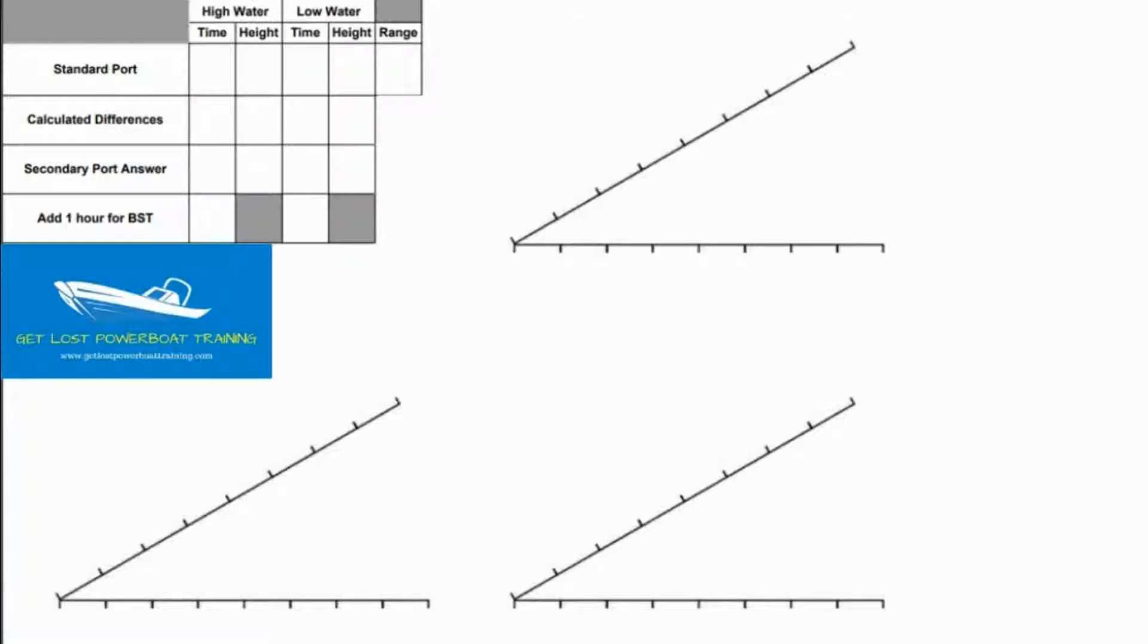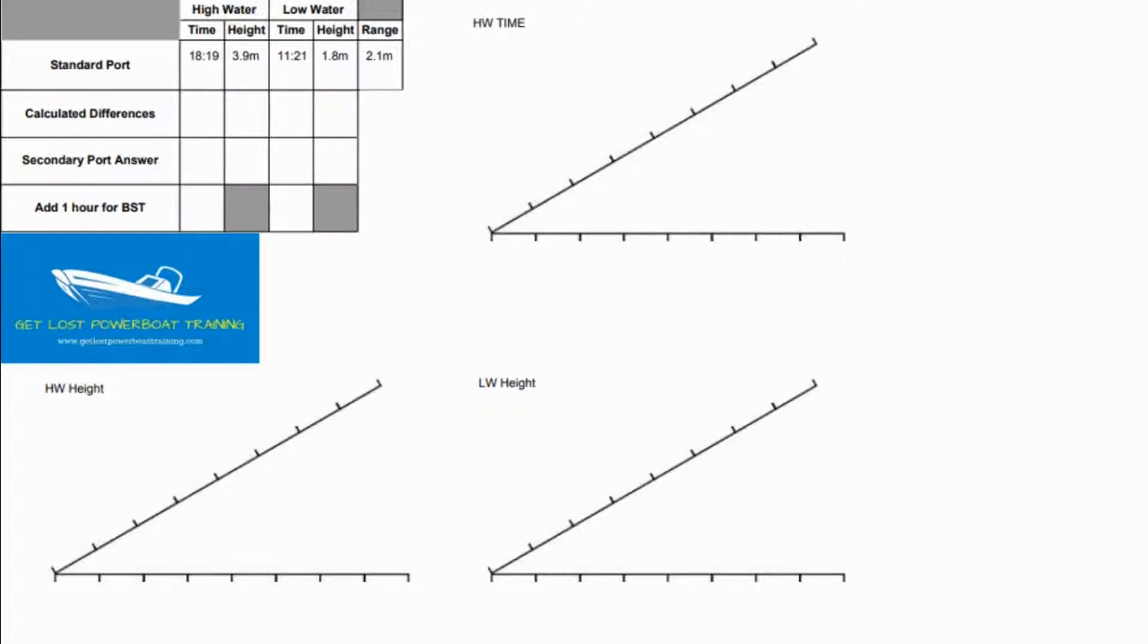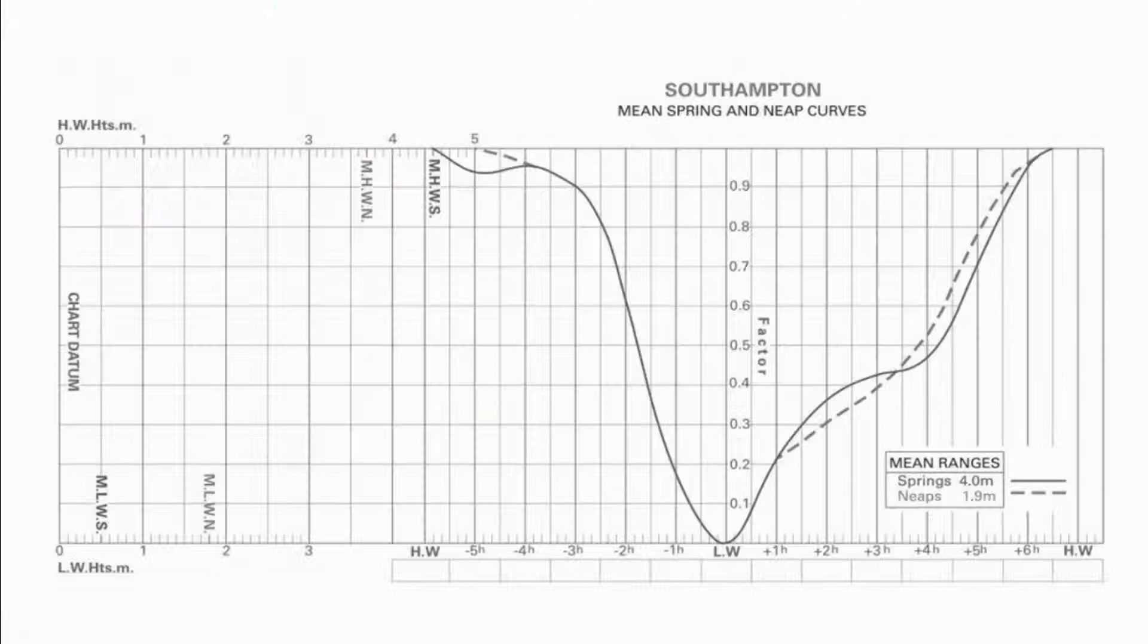So on my template I'm going to label my three triangles: high water time, high water height and low water height. If I was dealing with a curve that was based on low water the curve would be upside down, curving from top to bottom and back up again instead of starting at the bottom to the top and back down again. So instead of high water times and heights I would need to find out low water times and heights. So it's important to always check the curve first to make sure you're not wasting your time.